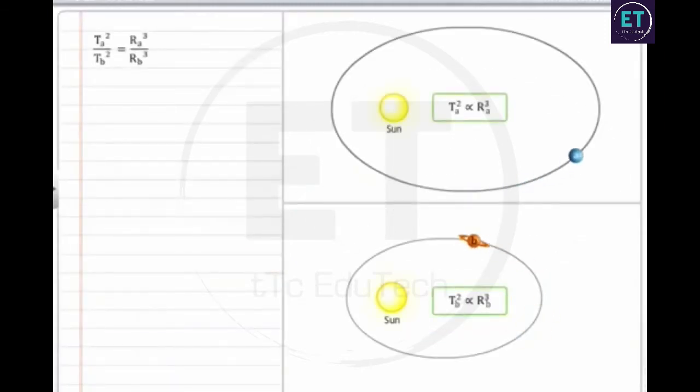If we consider two planets, A and B, and compare their mean distances from the sun and orbital periods, we get the relationship as T_A squared divided by T_B squared is equal to r_A cubed divided by r_B cubed.